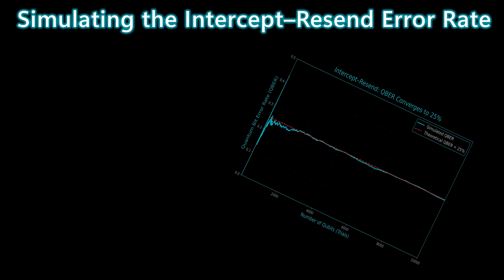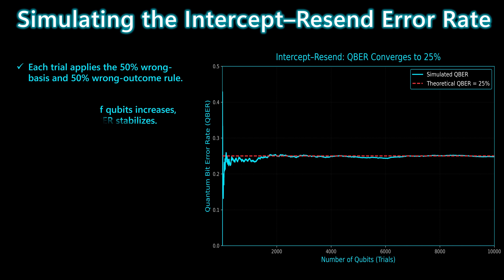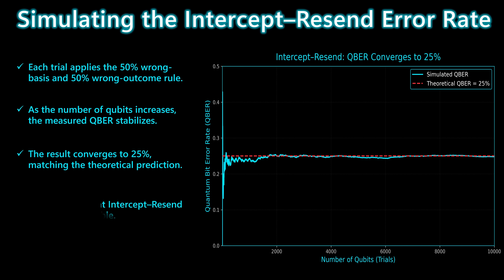Now let's look at a simple simulation of the intercept-resend attack. Each trial applies Eve's 50% wrong basis and 50% wrong outcome rule. As we increase the number of qubits, the measured error rate begins to stabilize. And just as the theory predicts, the QBER converges to 25%. This is the unmistakable signature of the intercept-resend attack, and it's why Alice and Bob can always detect it in practice.